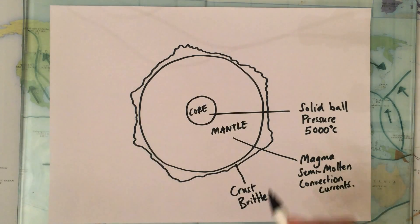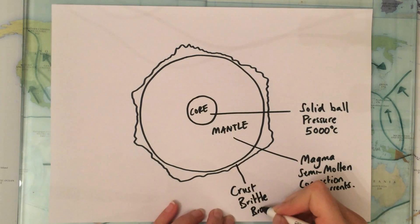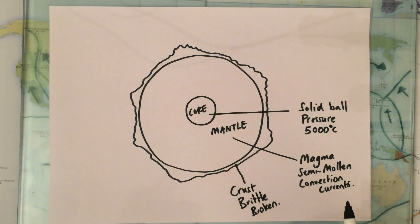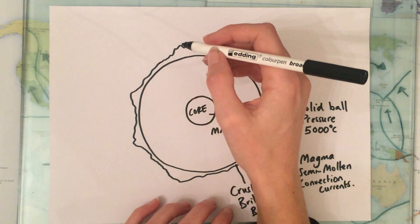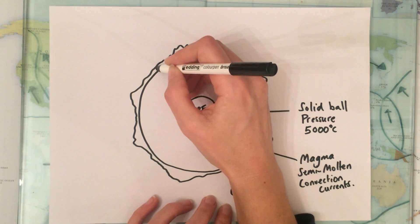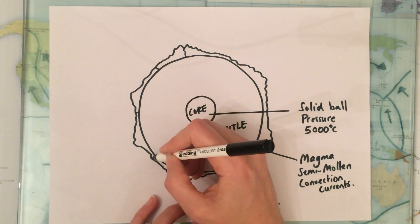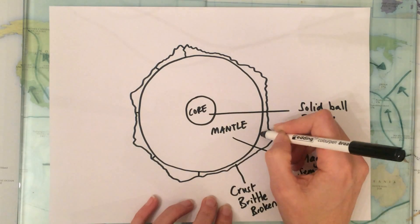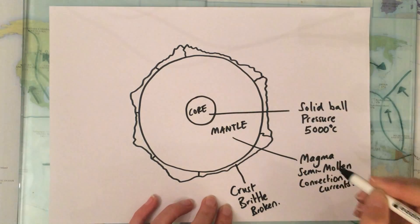It's brittle and it's broken into pieces and that's really what starts plate tectonic theory because those pieces are known as tectonic plates. So for example, let's break this into a few pieces, so the crust is broken into a few segments.